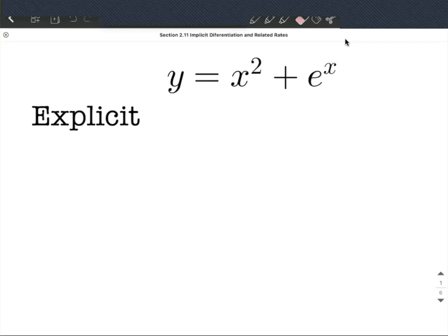So for explicit differentiation, we're going to have y on one side by itself, and the other side is just going to have x's, so no y's over on the other side.